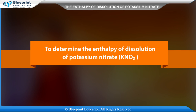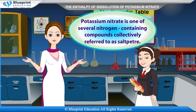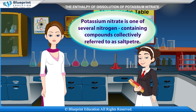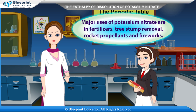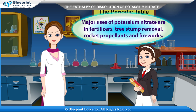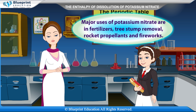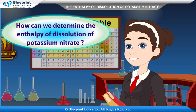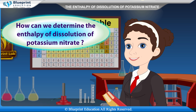To determine the enthalpy of dissolution of potassium nitrate, KNO3. Potassium nitrate is one of several nitrogen-containing compounds collectively referred to as saltpeter. Major uses of potassium nitrate are in fertilizers, tree stump removal, rocket propellants, and fireworks. How can we determine the enthalpy of dissolution of potassium nitrate?